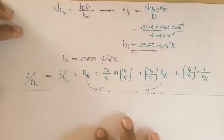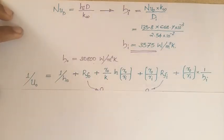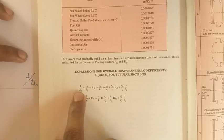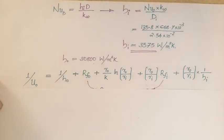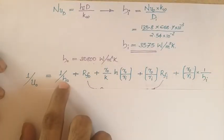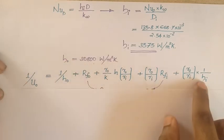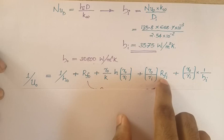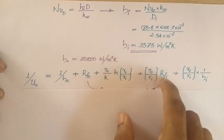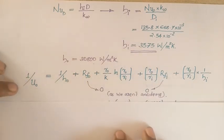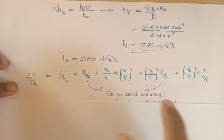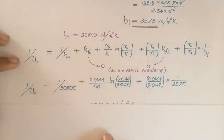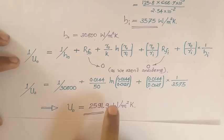Now we apply the equation for overall heat transfer coefficient from the data book. Since it is asked to find the overall heat transfer coefficient based on the outer radius, we use 1/U0. Rewriting the equation: 1/U0 = [expression with H0, HI, fouling factors RFO and RFI, and pipe dimensions R0 and RI]. H0 is given in the question and HI has now been evaluated. Since nothing is mentioned about fouling factors, RFI and RFO are taken as zero. Substituting all known values, we find the overall heat transfer coefficient U0.